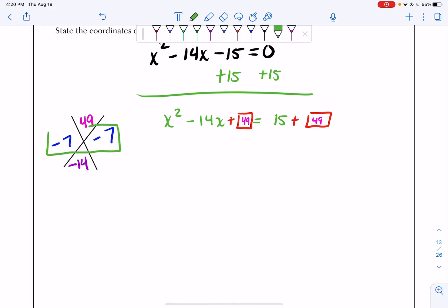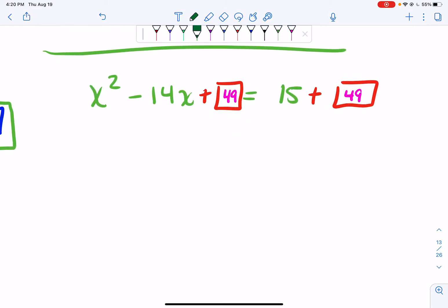So I can actually factor the left-hand side of my equation to be x minus 7 times x minus 7. And that's equal to 15 plus 49. If you use your calculator, 15 plus 49 is going to be equal to 64.